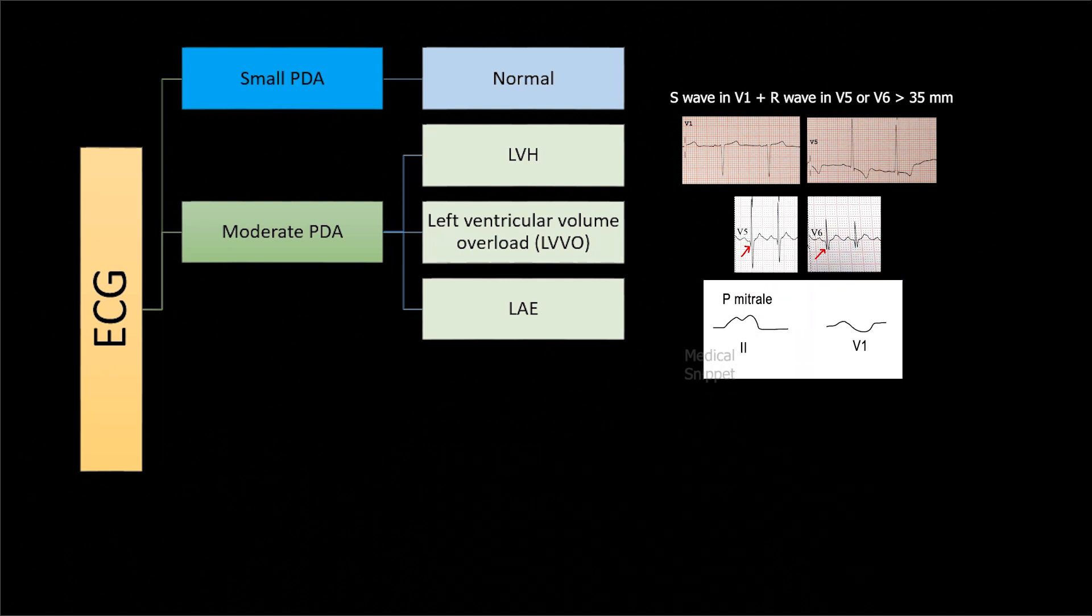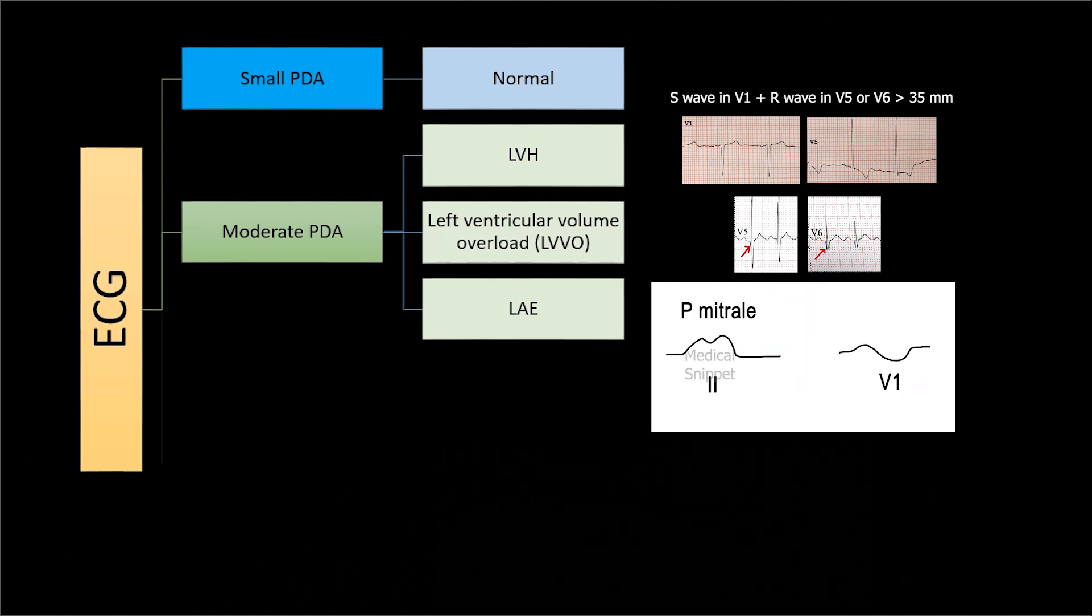Also sometimes there is left atrial enlargement, seen as broad bifid P wave in lead 2, and enlarged terminal negative portion of the P wave in V1 lead.